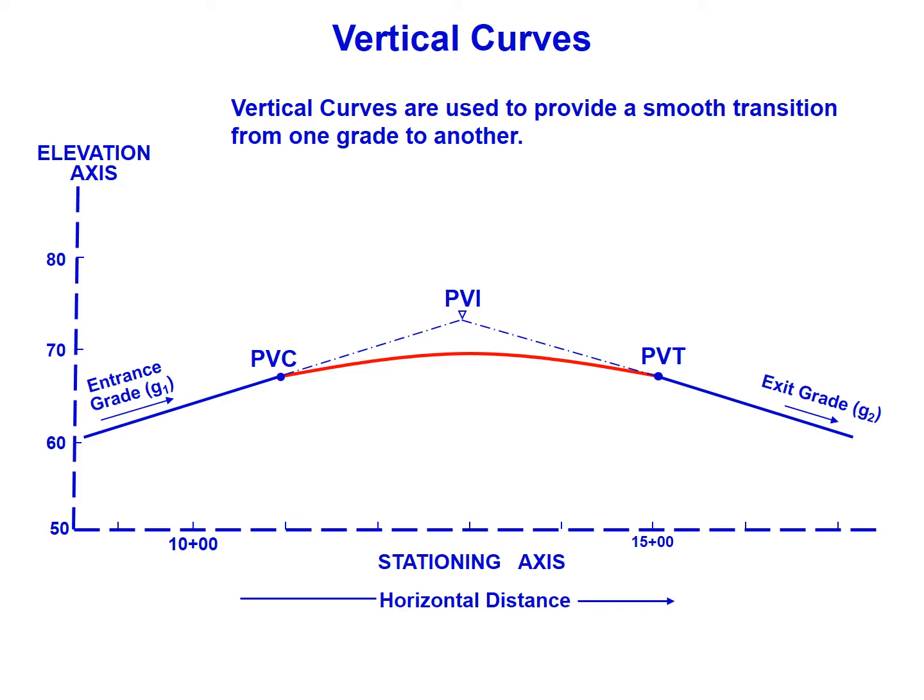The vertical curves I'll cover we'll assume will all be symmetric parabolic curves. Symmetric means that they're equal on each side of the PVI, so there's symmetry within the vertical curve. Parabolic means that the parabolic equation defines the shape of the vertical curve. On the y-axis we'll see the elevation as we move along the grades and the vertical curves.